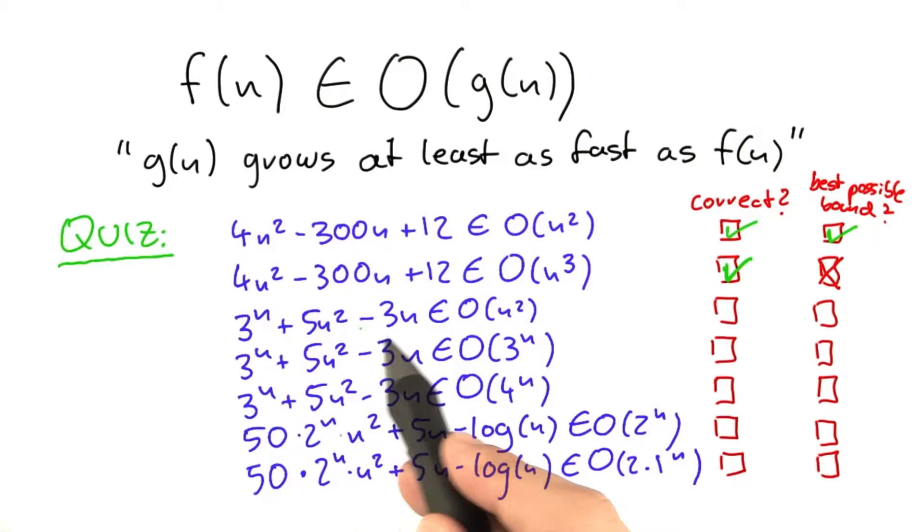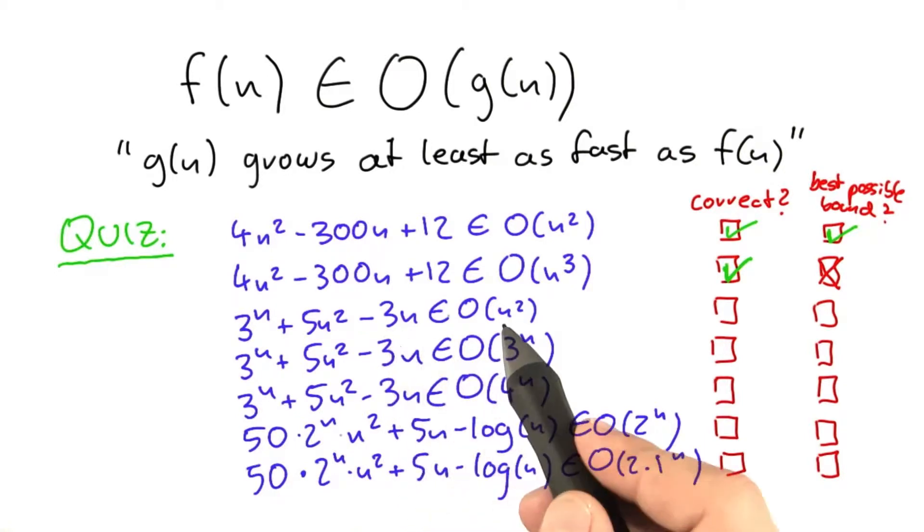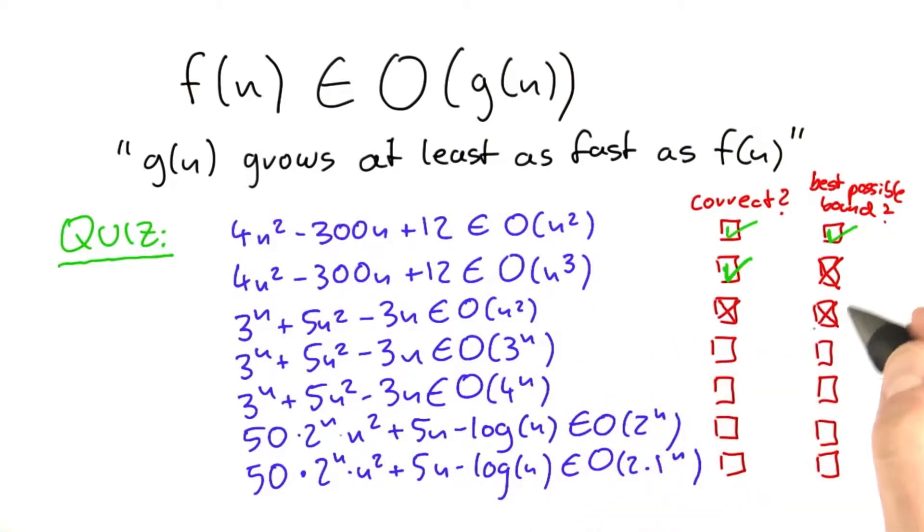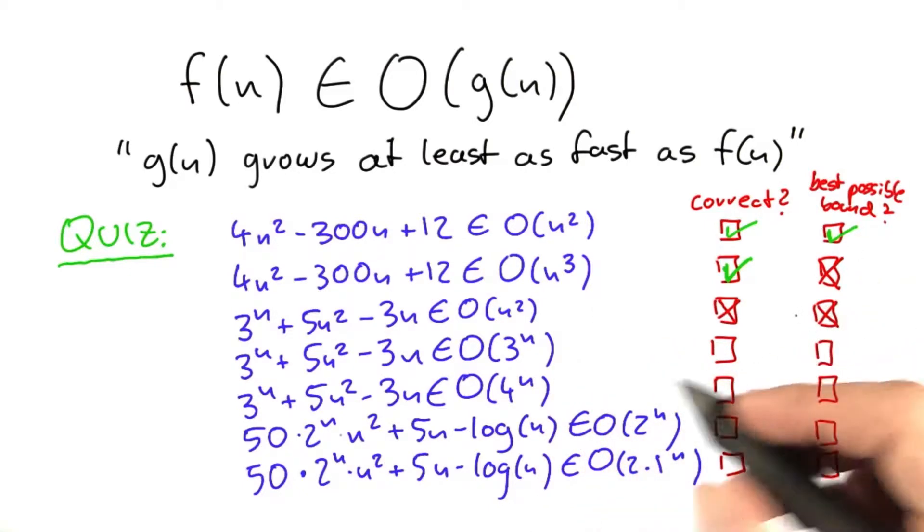Now down here, 3 to the power of n plus 5n squared minus 3n grows much faster than n squared. So this is not true. And of course, it cannot be the best possible bound if it's not a correct bound at all.